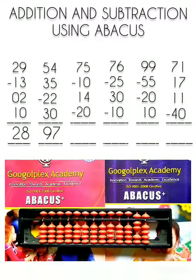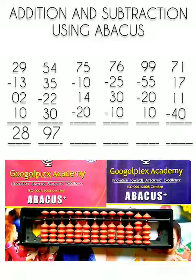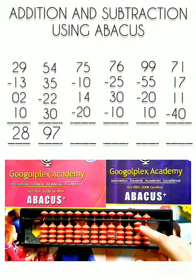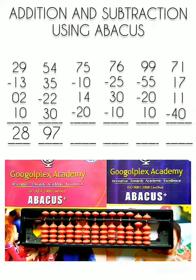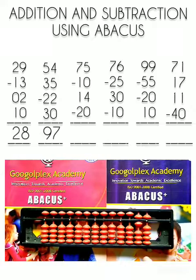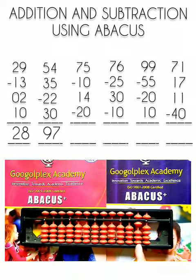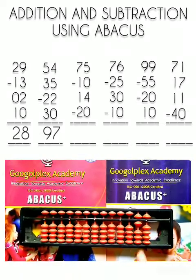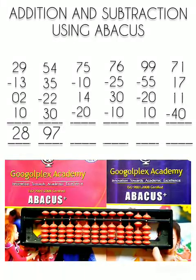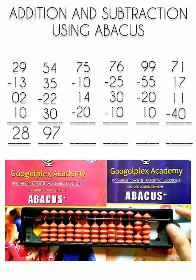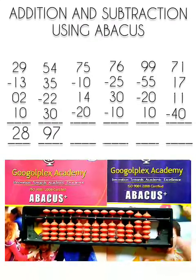Now we have to subtract 10 from this number. Minus 10. Now we have to add 14. For 14 we will raise 1 bead of the 10's rod and 4 beads of the 1's rod. This is 10, 11, 12, 13, 14.